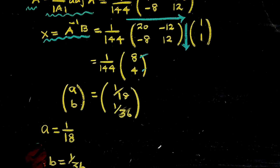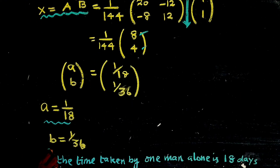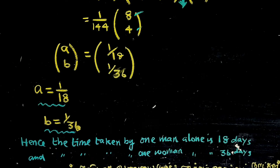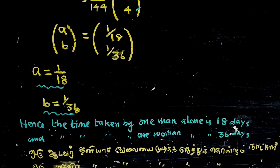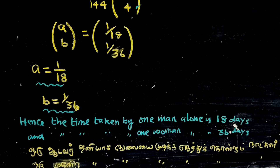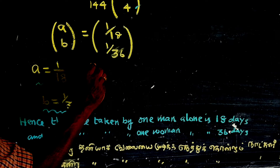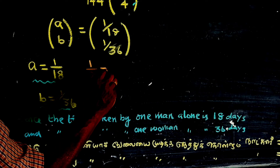Therefore a is equal to 1 by 18 and b is equal to 1 by 36. Since a = 1 by x and b = 1 by y, we can now find x and y.